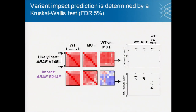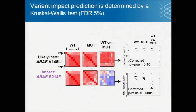For each mutation, these heat maps can be represented as distributions. Using a Kruskal-Wallis test, we can ask whether there appears to be a change in the distributions. Using this test and then doing an FDR correction, we can predict, for all of our variants, which ones are likely to be functionally impactful versus not.